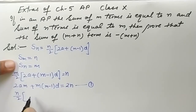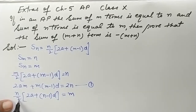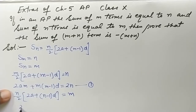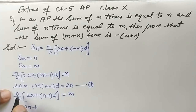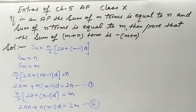Again multiplying both sides by 2, the right-hand side becomes 2m, and distributing n inside: 2an + n(n−1)d = 2m. This is our second equation.